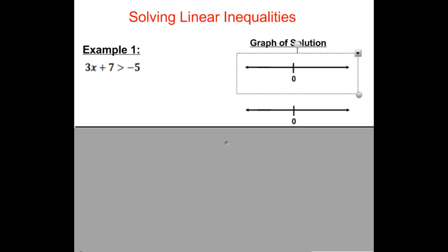So let's try solving some linear inequalities and graphing their solutions. So here's our first one. 3x plus 7 is greater than negative 5. So we solve it just like we are solving an equation. We can pretend that this inequality symbol is just an equal sign. So we begin by subtracting 7 from both sides. And we have 3x is greater than negative 12.